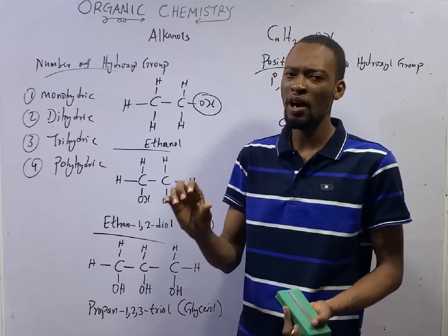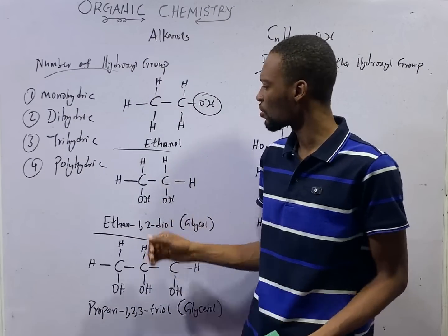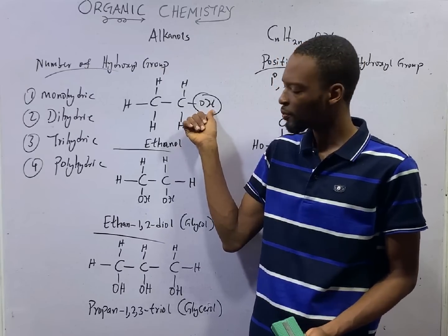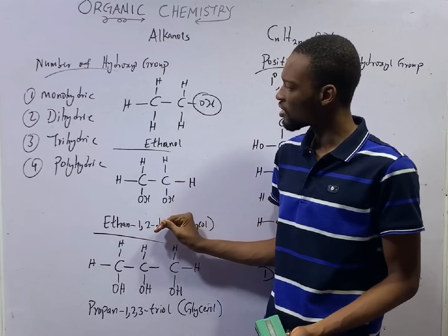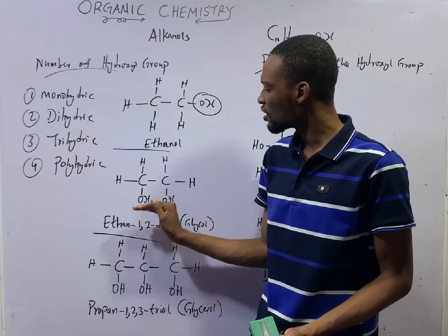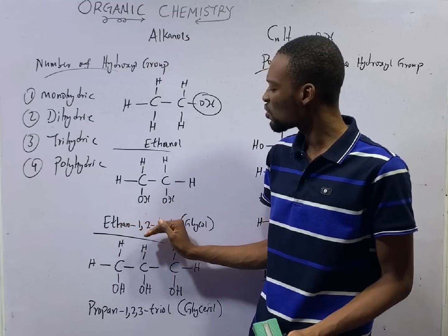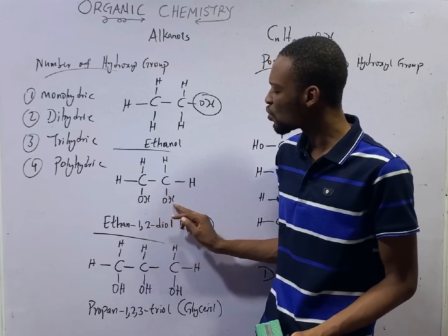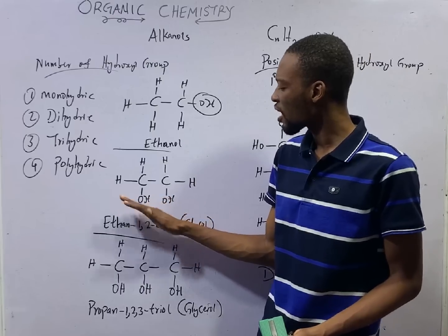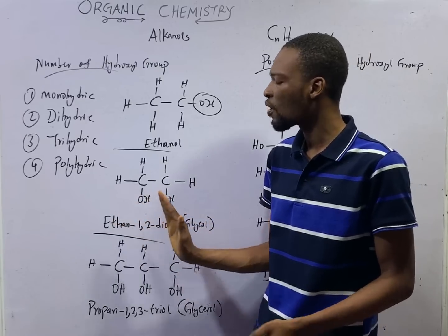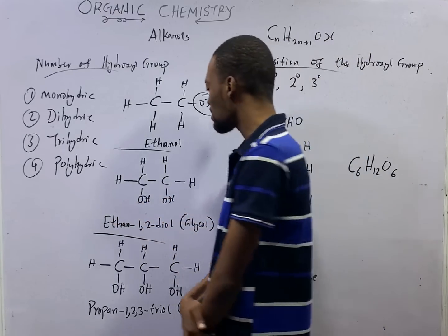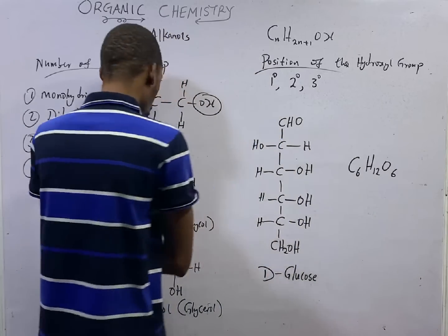An example of a monohydric alcohol is ethanol — it has just one OH. An example of a dihydric alcohol is ethane-1,2-diol. As you can see, it has two OH — two carbons, two OH. The common name for ethane-1,2-diol is glycol.